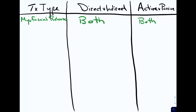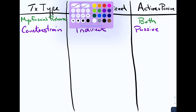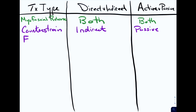Then we have counterstrain. Is that going to be a direct or indirect technique? Counterstrain, by definition, has you going away from the restriction — so that's an indirect technique. Classically, it is also passive because the patient is relaxed while you're treating them. We also have facilitated positional release, or FPR, which is similar to counterstrain. It is also indirect and passive.